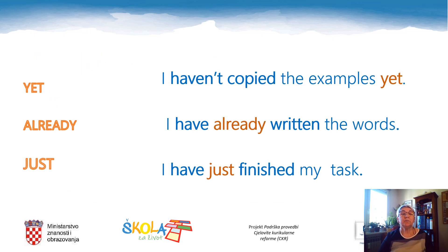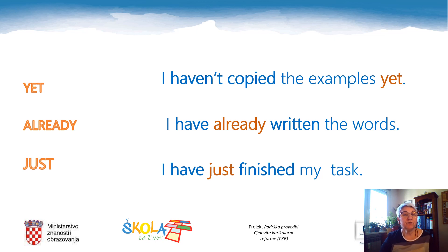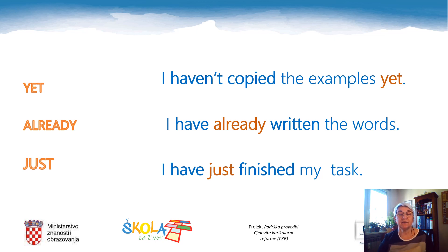We also use the present perfect with 'yet,' 'already,' and 'just.' 'Yet' goes to the end of the sentence and is used in negative sentences: 'I haven't copied examples yet.' Have you copied my examples from the previous slides? Not yet. To say 'not yet,' we make the sentence negative: 'I haven't copied,' and we put 'yet' at the end. You can also say 'I have already written' or 'I've just written — I've just finished.' 'Already' and 'just' come between 'have' and the verb. 'Yet' goes to the end of the sentence and the sentence is negative. Keep this in mind.